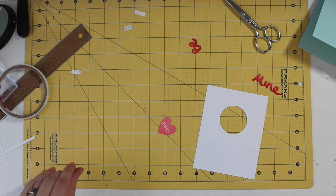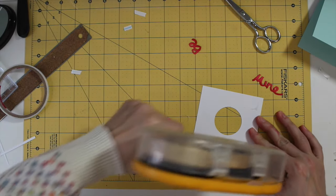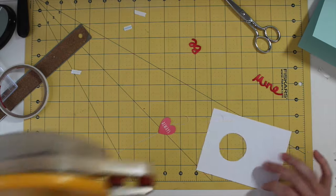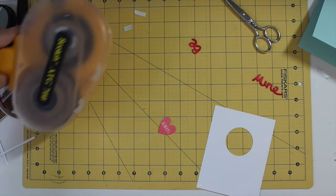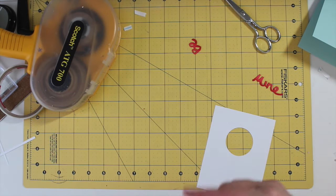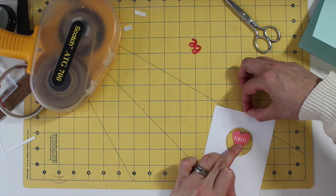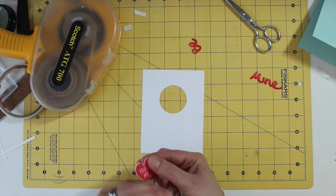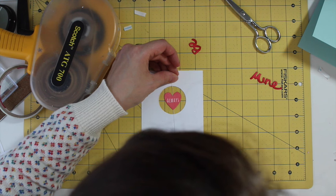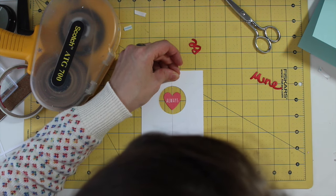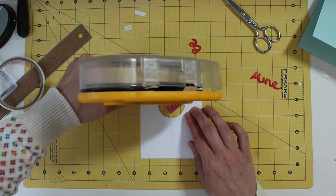So now I'm going to use my ATG to add adhesive to the back of that front panel. And I might as well do all of it while I'm back here. So you're going to take the thread and the die cut and line it up. Pardon my big head. It gets in the way every video. My apologies.